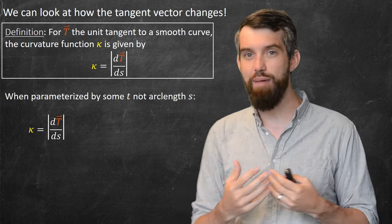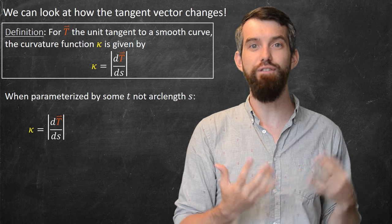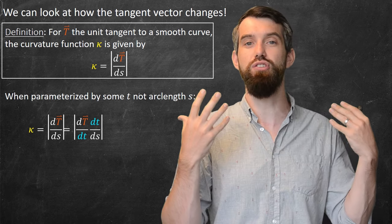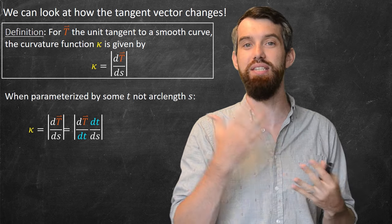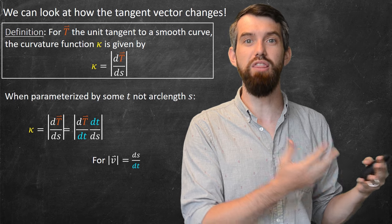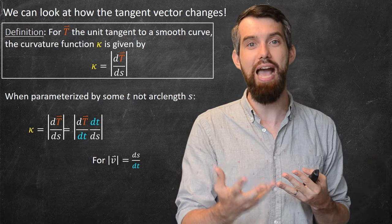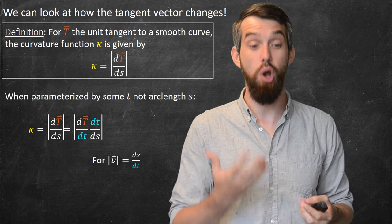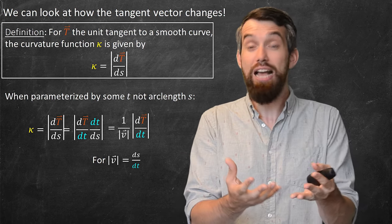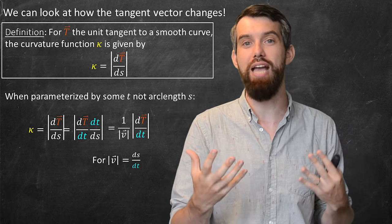Indeed, if you look at what we define kappa by, the change in the unit tangent vector with respect to arc length, via the chain rule I could take instead the derivative with respect to some other parameter t, and then I'd have this dt/ds floating around as well. However, we've previously seen when we were studying arc length that the velocity vector can be described as, in magnitude, as ds/dt. So provided this thing is non-zero, we can then go and say that the kappa is actually going to be 1 over the velocity vector times the derivative of the unit tangent with respect to t.